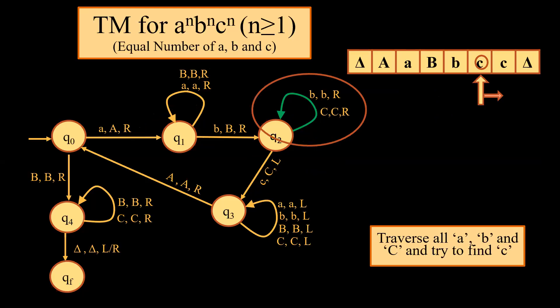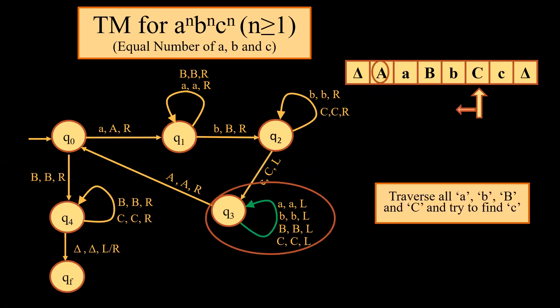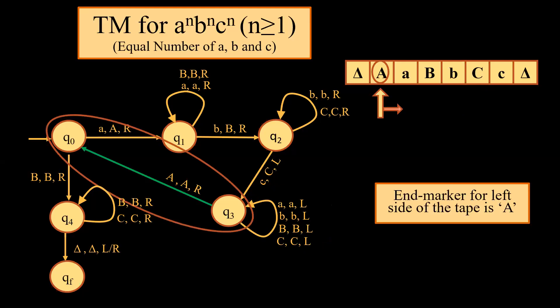When traversing from B to C, we will come across small B and capital C, so we keep them intact: B, B, R and C, C, R. Then we move towards small C. When we come across small C, we convert it into capital C, since we have already converted small A into capital A and small B into capital B. We then start moving towards the left. When moving left, we may come across small A, small B, capital B, and capital C, and we keep on moving left without changing any of these. We then come across capital A — which we had converted at Q0 — and this capital A serves as an end marker on the left side, causing the machine to stop moving left and start moving right again.